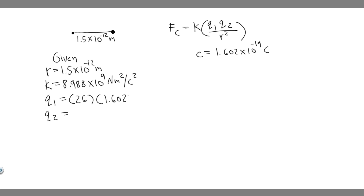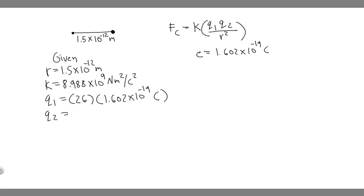The charge of an electron is 1.602 times 10 to the minus 19 coulombs. The second particle is its innermost electron, so Q2 is also 1.602 times 10 to the minus 19 coulombs. Now we have Q1, Q2, R, and K, so all we have to do is plug it in, since we have everything in the correct units.